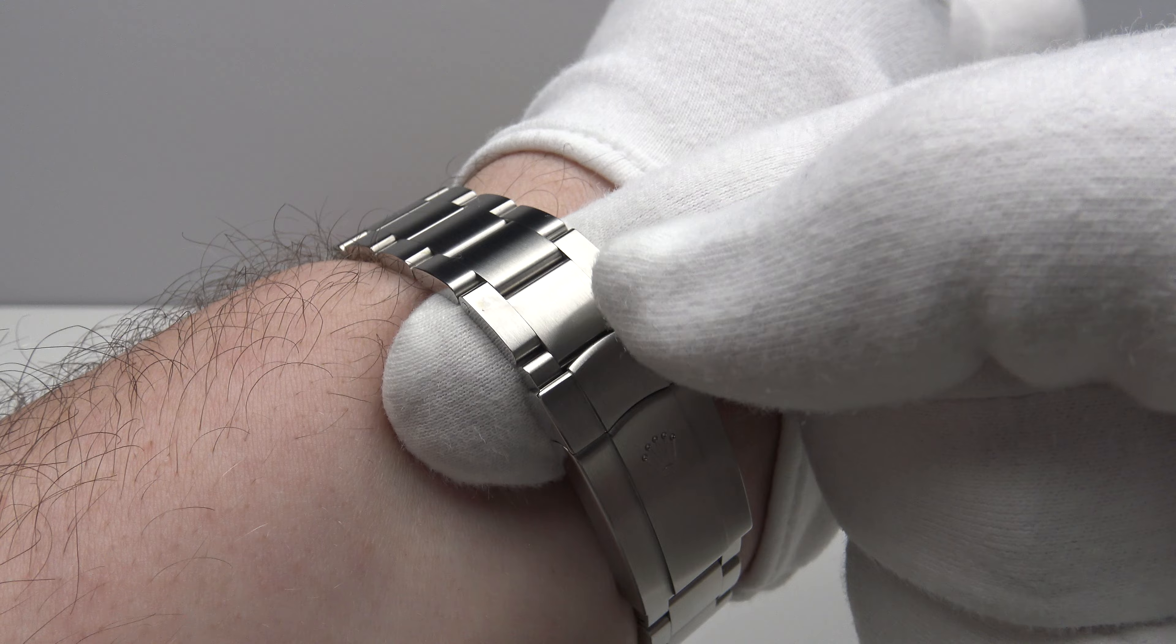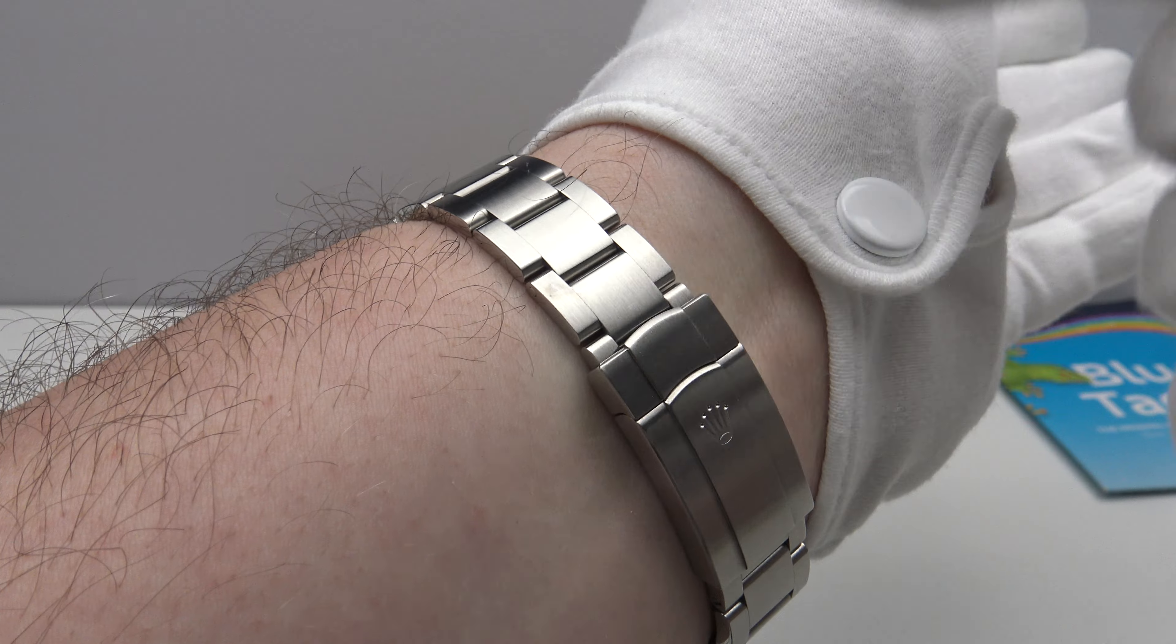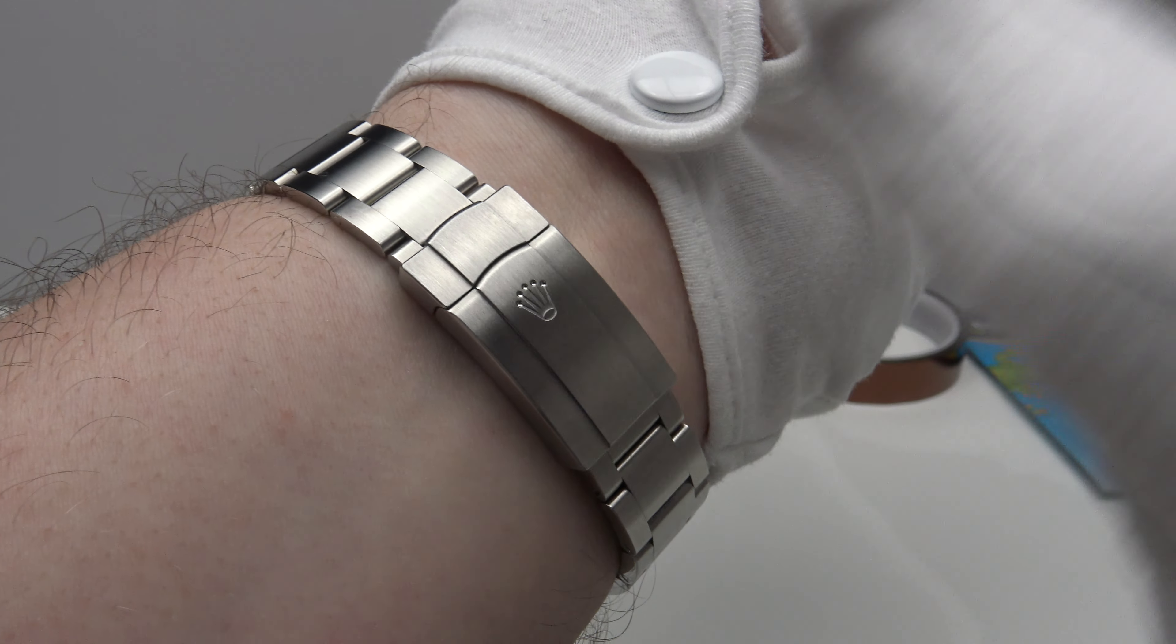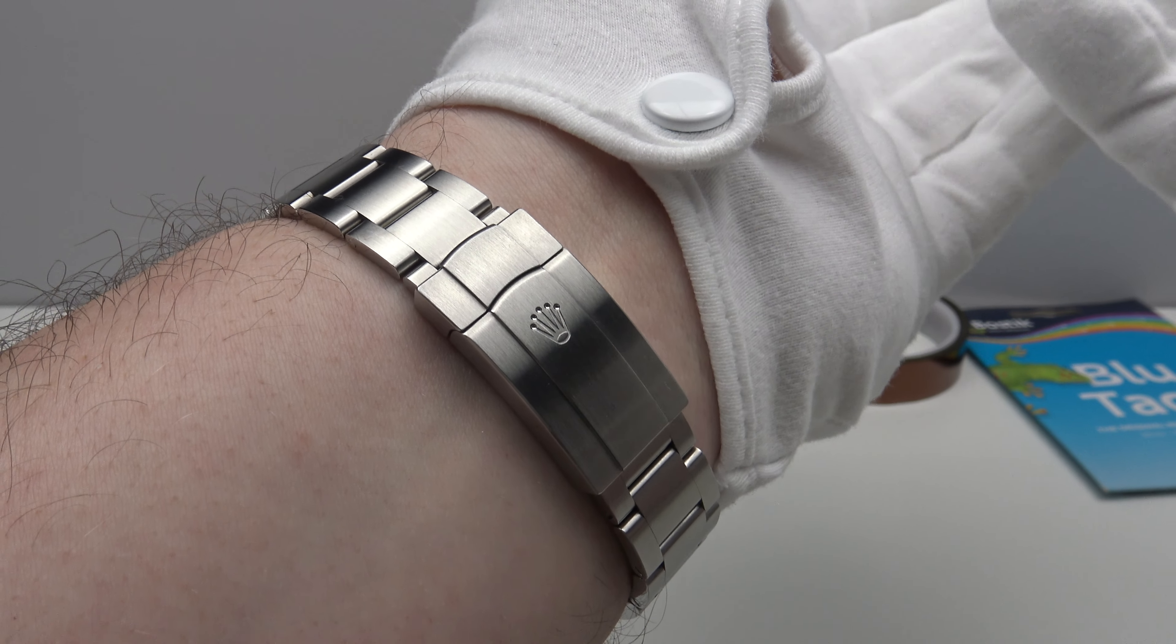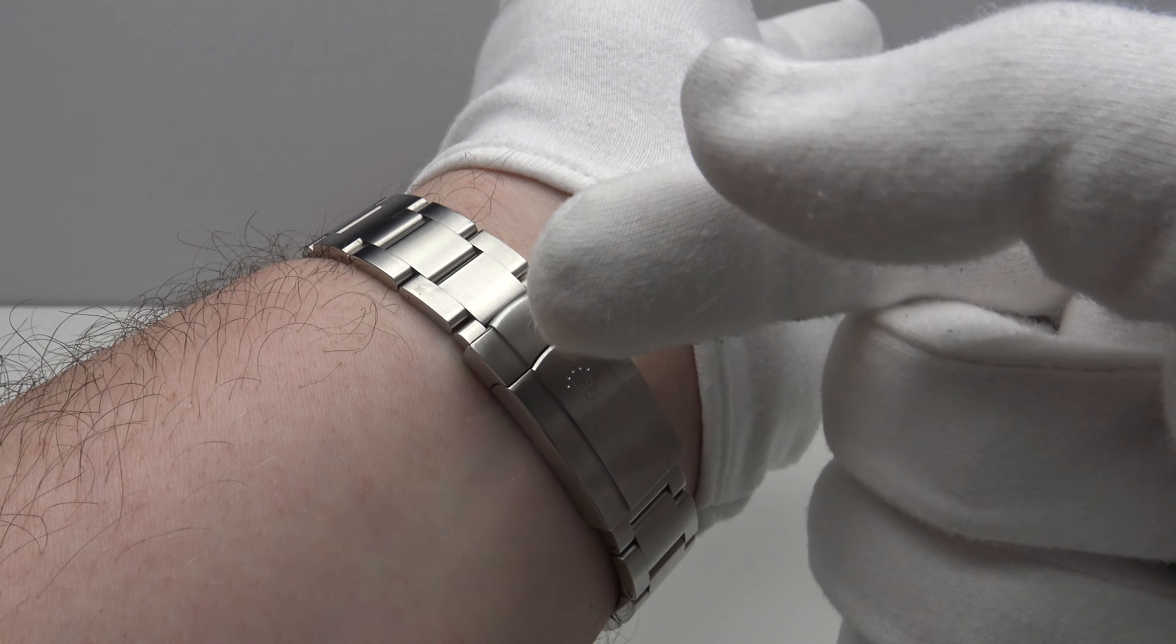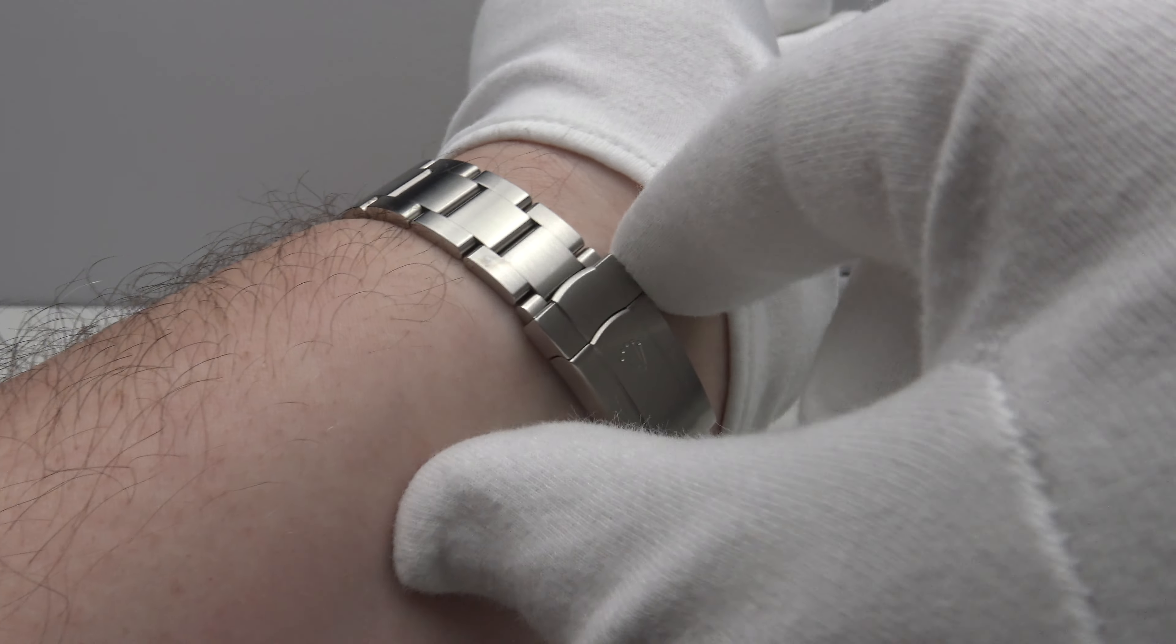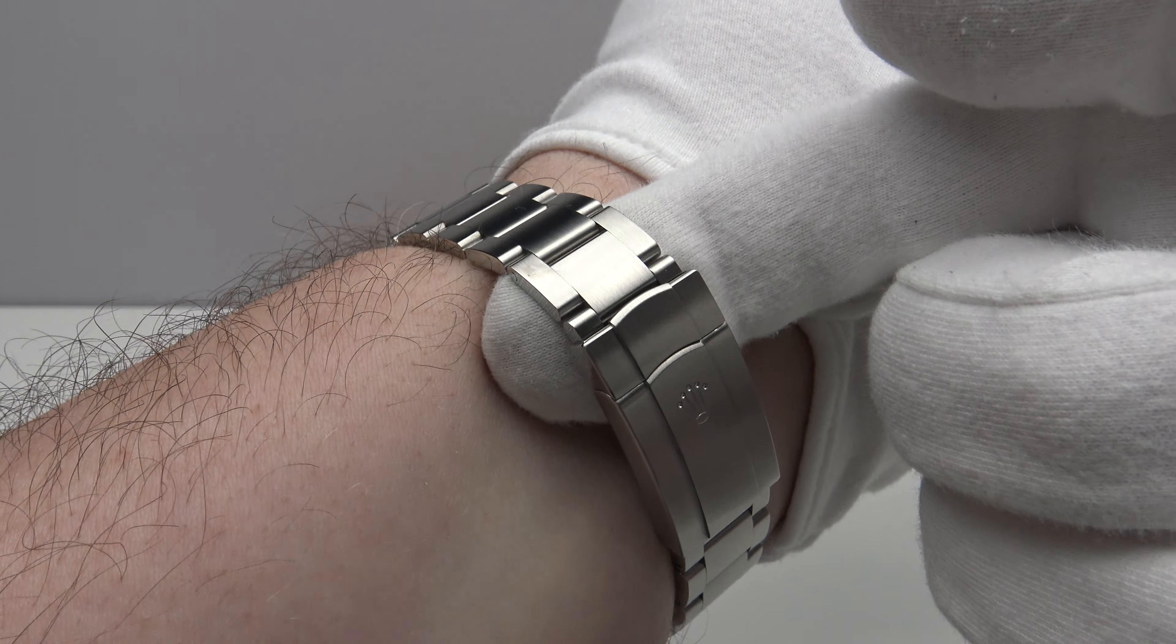Now, the reason why one allows an index width of expansion underneath the clasp at all times is to allow for wrist expansion in warm weather. If one is active playing sports, for example, the wrist swells. And really, one needs to have an index finger width of expansion underneath the bracelet and clasp at all times to allow for expansion.